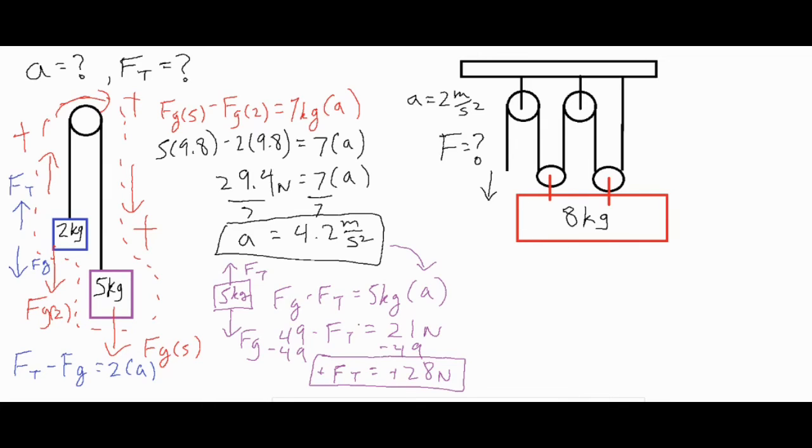Now for our second one, we have an eight kilogram block being pulled up by this certain pulley system and it has an acceleration of two meters per second squared. So the question is how much force do you have to apply downwards on this rope in order to accelerate this eight kilogram block upwards at this rate over here.